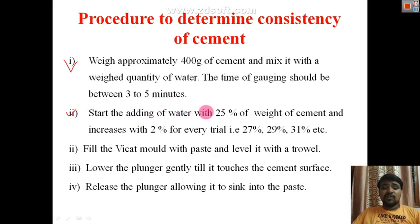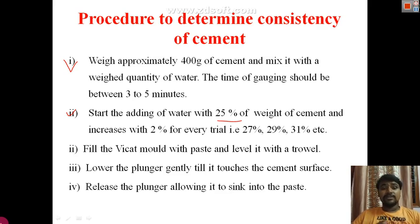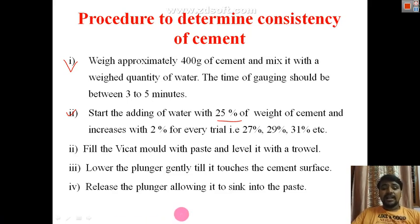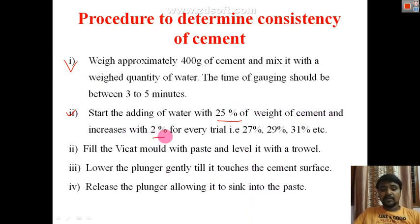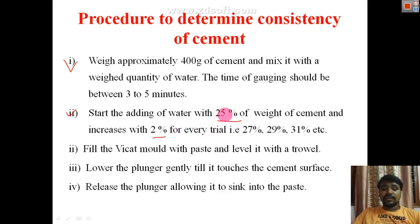Start adding water at 25 percent because if you start from 5 percent, with 400 grams of cement the paste will be very dry. Start at 25 percent and increase by 2 percent each trial — so 25, 27, 29, 31 percent and so on — because a 2 percent increment shows measurable variation in results.